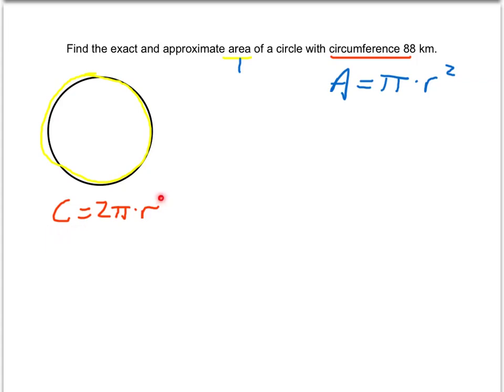If we know the circumference, then we can find the radius. And if we can find the radius, then we can find the area. So let's type in the given information. We know the circumference is 88, so that means 88 must equal 2π times radius.